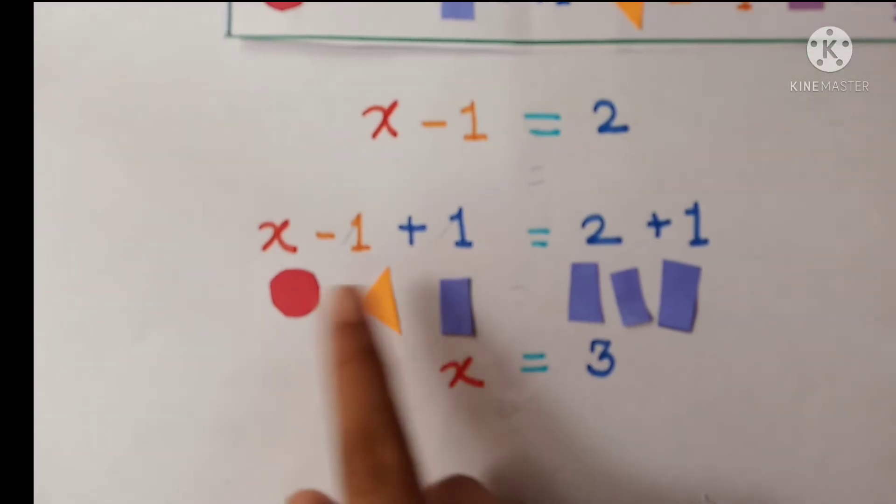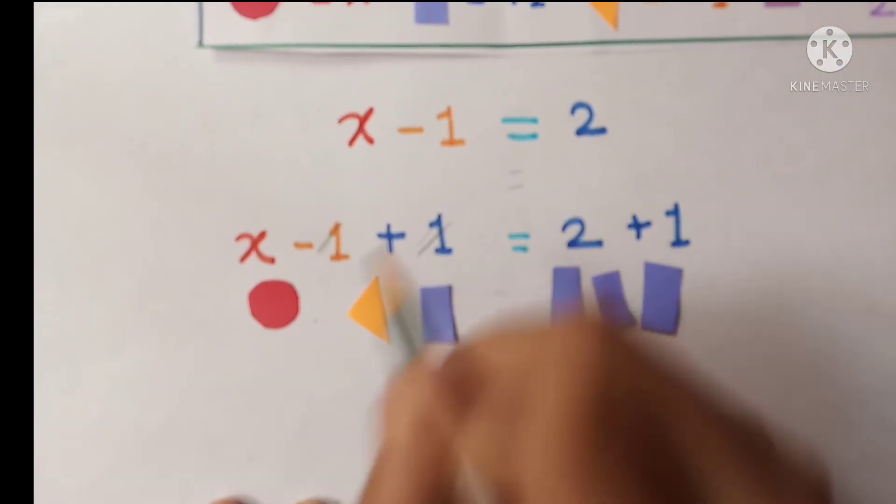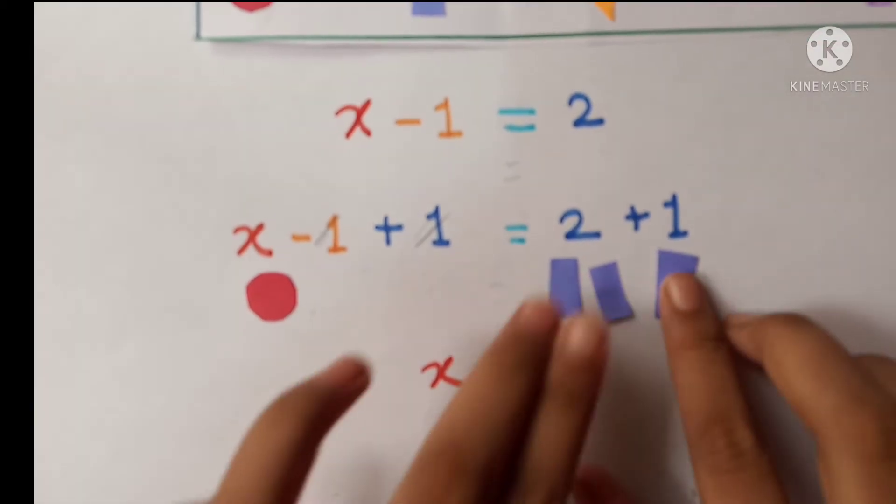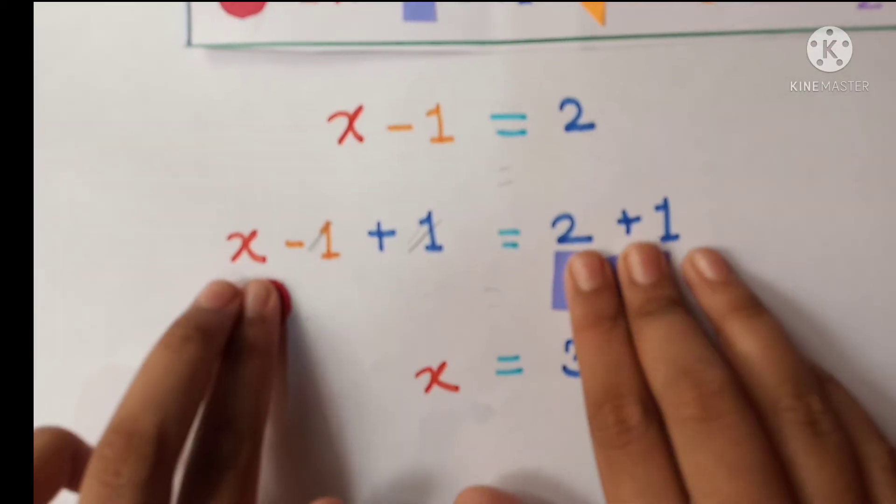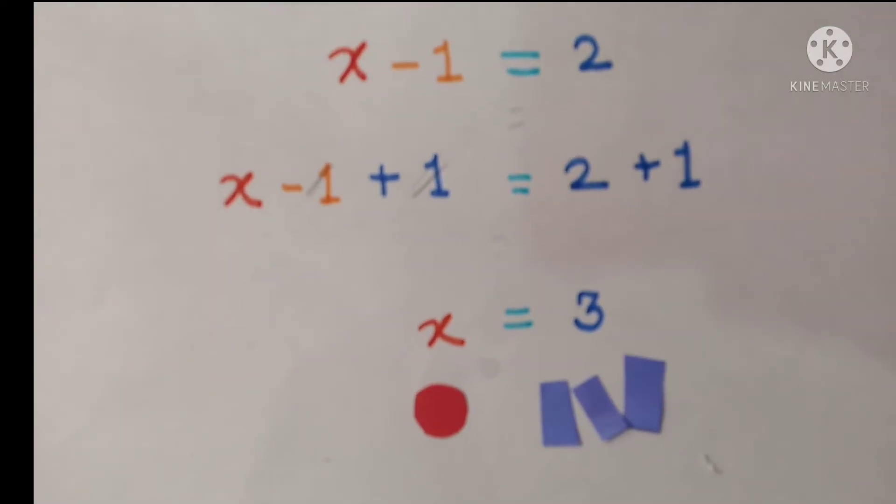Here plus 1 and minus 1 will cut and become 0. So let's remove it. And 2 plus 1 is equal to 3. So x is equal to 3. So here our second equation is done.